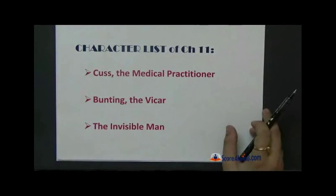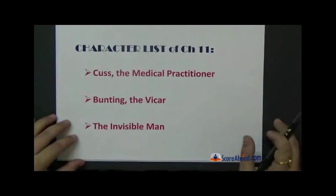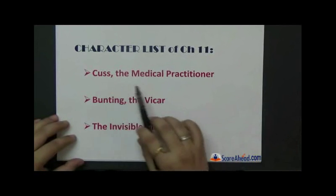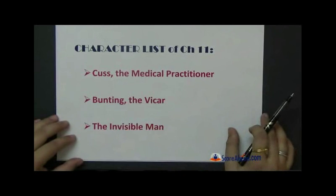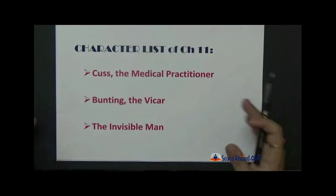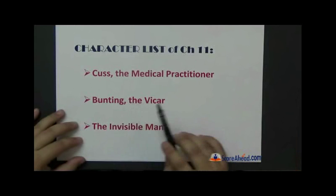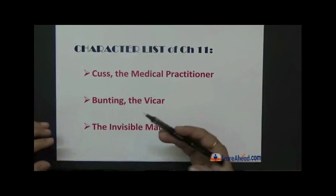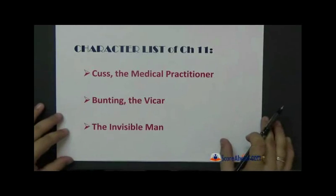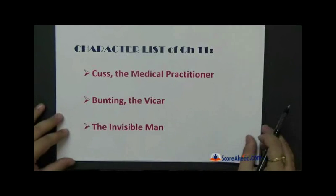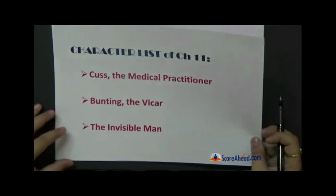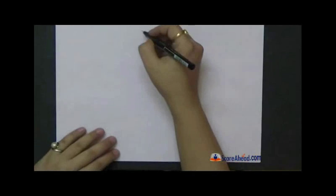Before that we have a list of characters: Cuss, the medical practitioner—you remember him, of course, we have done a complete chapter on him. Bunting the vicar, we have already heard about Bunting, we have done a chapter on him. And the invisible man.